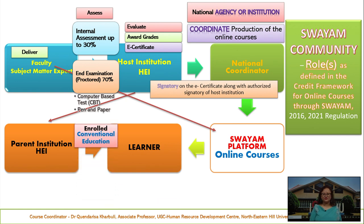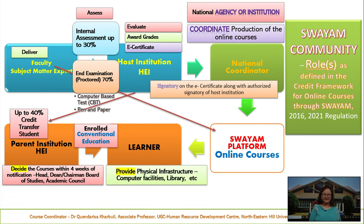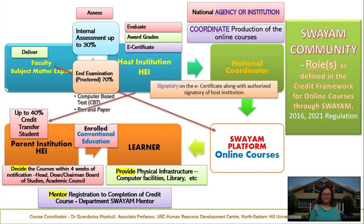A parent institution is an institution where the learner is enrolled, that is, where the learner is undergoing conventional education. It is the duty of the parent institution to ensure that credits acquired by the learner through the SWAYAM platform are transferred to the learner's mark sheet, along with credits obtained for the conventional mode of education. The parent institution must also decide on the online courses notified each semester by the SWAYAM board.